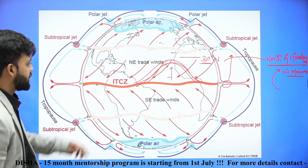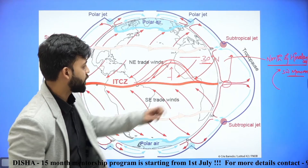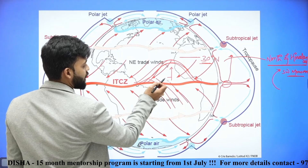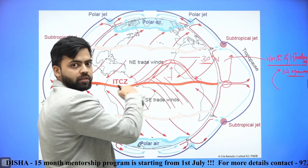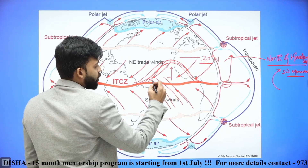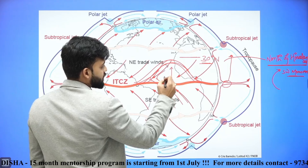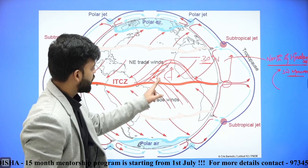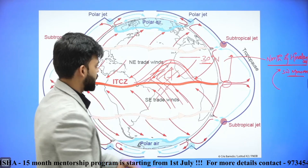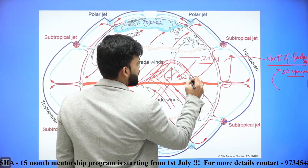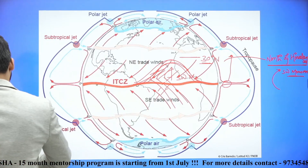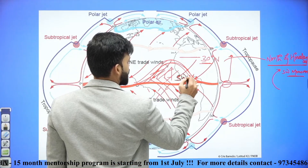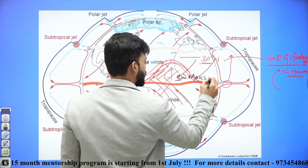When the ITCZ moves northward, the southeast trade winds also move northward. As they cross 0 degrees or the equator, because of the Coriolis force, they deflect towards the right — moving from southeast to southwest. That is why the monsoon in India becomes the southwest monsoon, because of the effect of the Coriolis force.